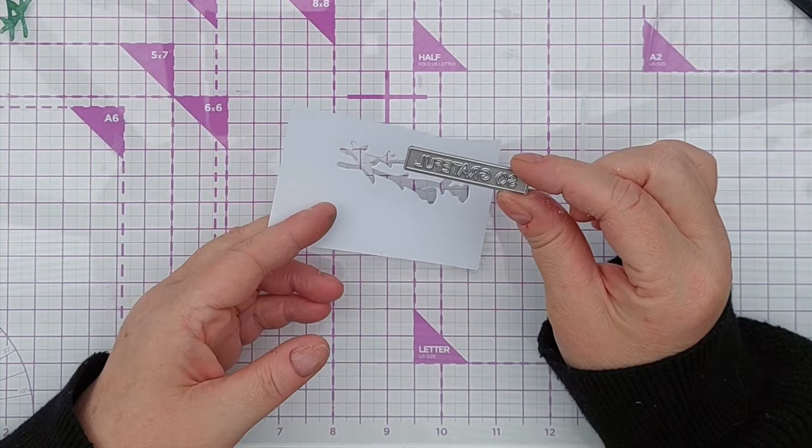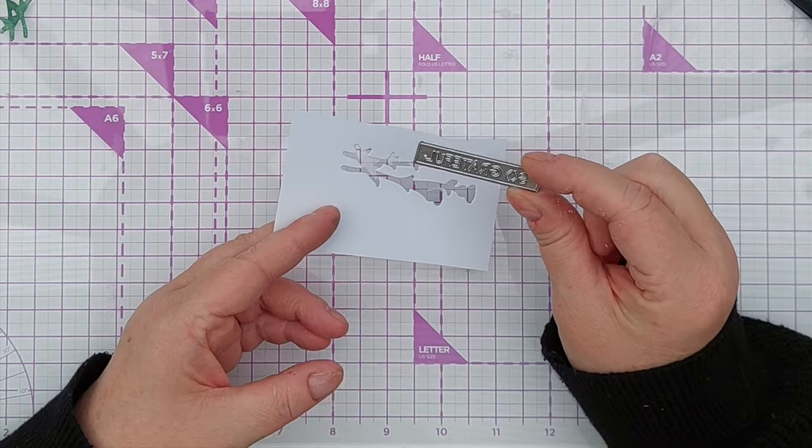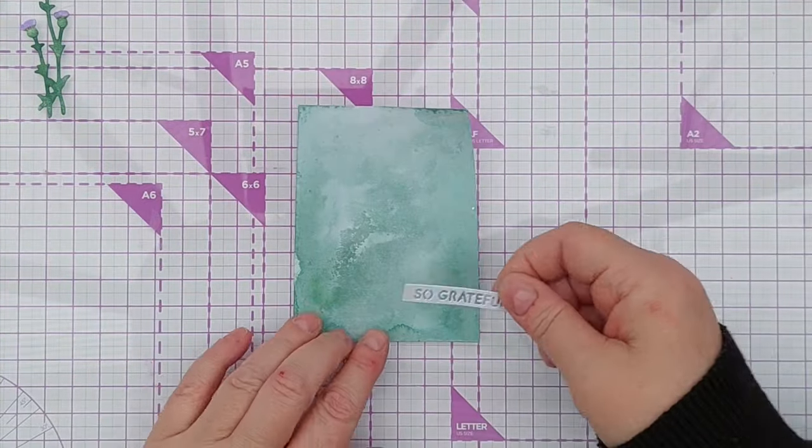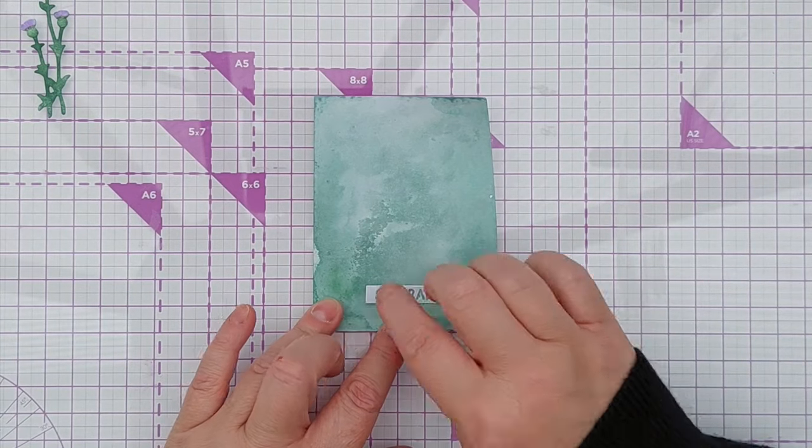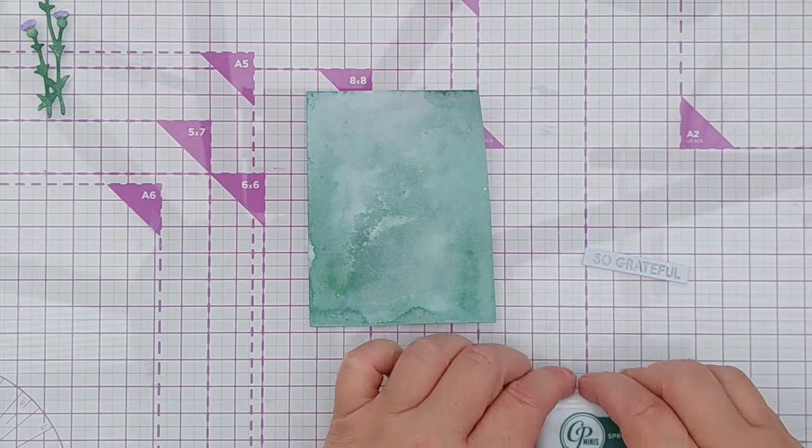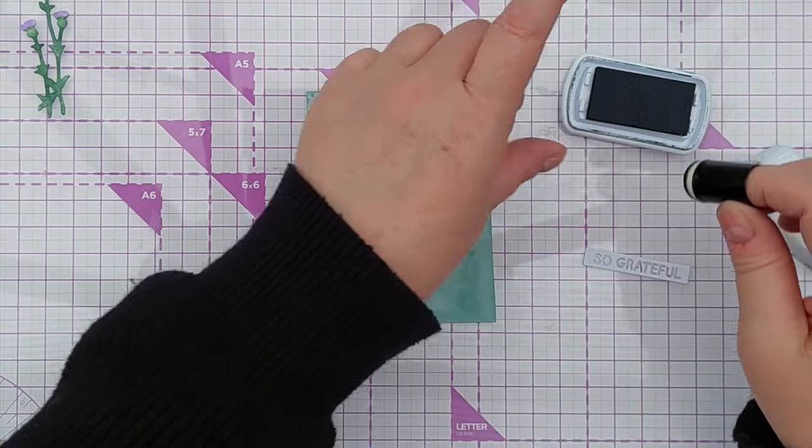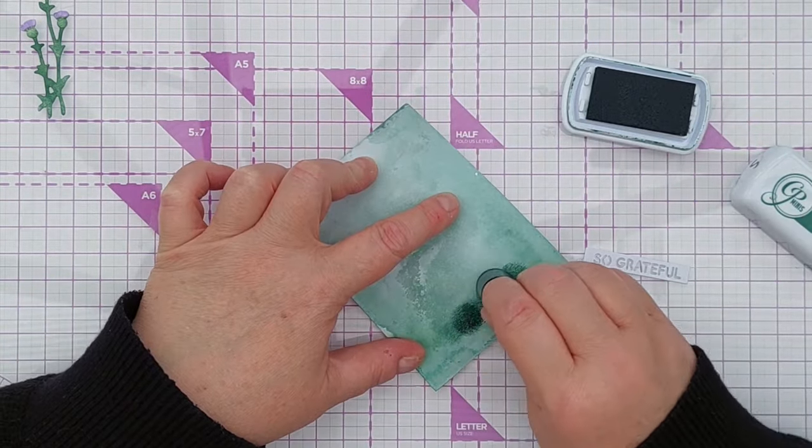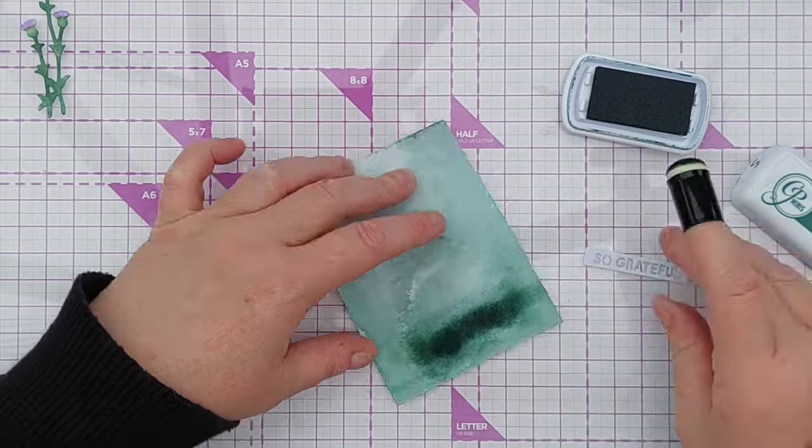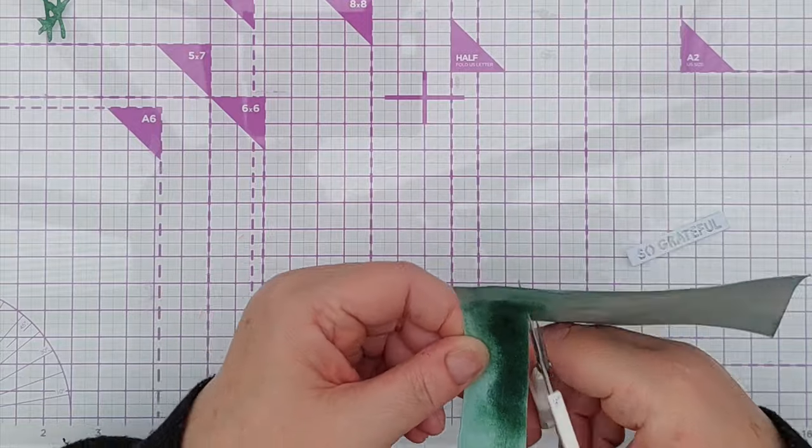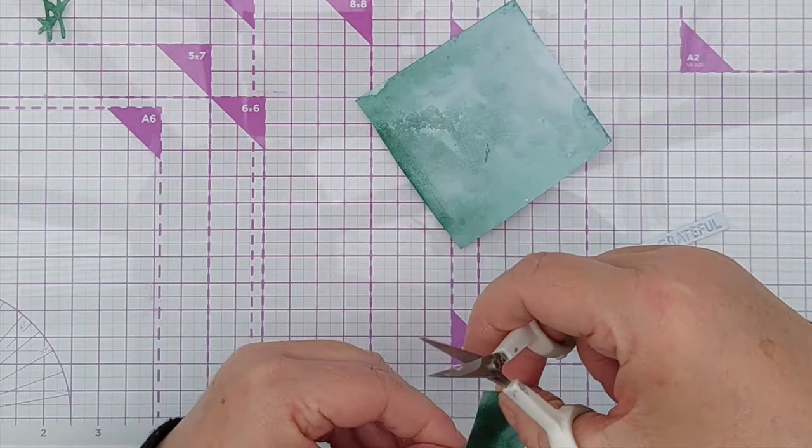We're almost ready for assembling and I'm going to use this So Grateful sentiment die and cut it from white cardstock and I've got this bit of smooshed paper that I did earlier which will be good for backing my So Grateful but I think I'm going to just darken it a little bit and cut out a rectangle to put behind my sentiment piece.